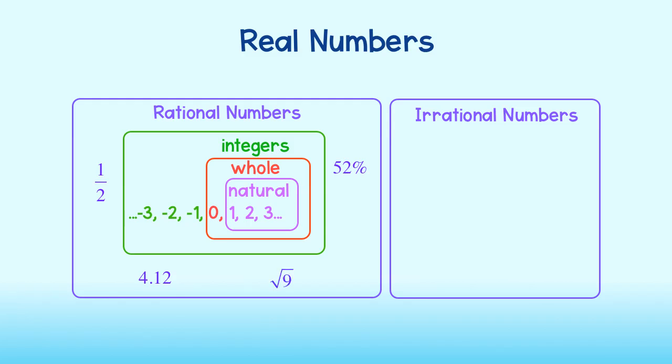On the other hand, irrational numbers are numbers that cannot be written as a fraction. The decimals of these numbers will go on forever without repeating. These are numbers such as 6.1342258 and so on, the square root of 15, and other roots of non-perfect squares and cubes, and pi.